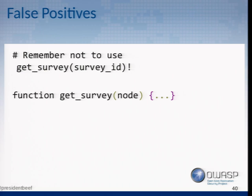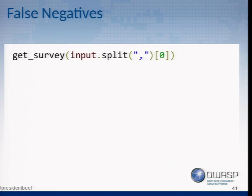There are problems with using regular expressions. For example, if a line is a comment saying 'don't use get_survey,' we'd flag it as a use of the API — that would be bad. Down here, we're actually defining a method called get_survey, but we're looking for uses, not definitions. And we also have the problem where we run a regular expression looking for commas — there's a comma, and we think there are two arguments. But actually it has only one argument. Our regular expressions have failed us. You could try writing a better regex, but eventually that's more work than it's worth.